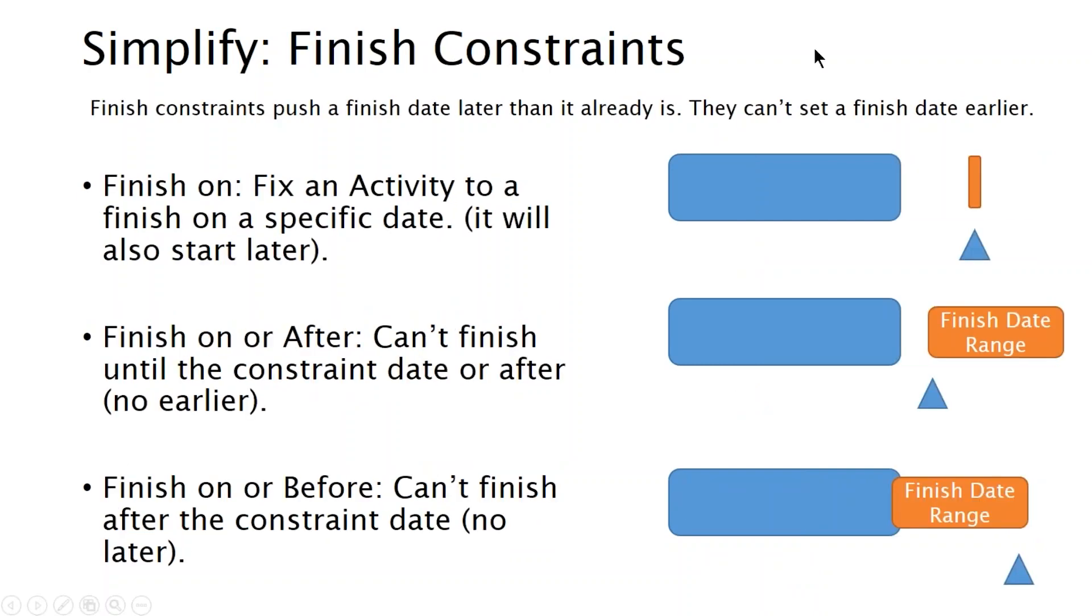The same way start constraints pull an activity into the future by their start date, finish constraints do the same thing. They pull an activity into the future, but by the finish date. So you can't ever do it in the reverse direction. You can't set a finish date earlier. I mean, you can, but it's not going to work is what I'm saying. So once again, we have finish on, finish on or after, finish on or before. And finish on, again, picks a very specific date and says, finish this activity on this date. So again, the blue box represents the original activity. You could imagine this activity being moved to finish on this orange bar. So that's the new finish date for the activity. And the start date would be pulled into the future as well. Now, finish on or after, again, leaves me open to having a date range in case my logic is pushing things later. So finish on or after says, you know, finish this activity on this date, or any time after that is fine with me as well.